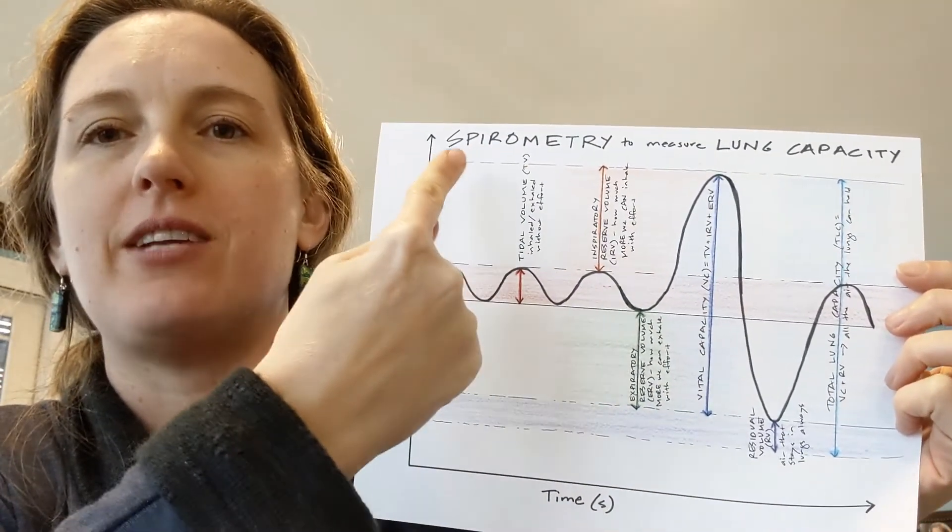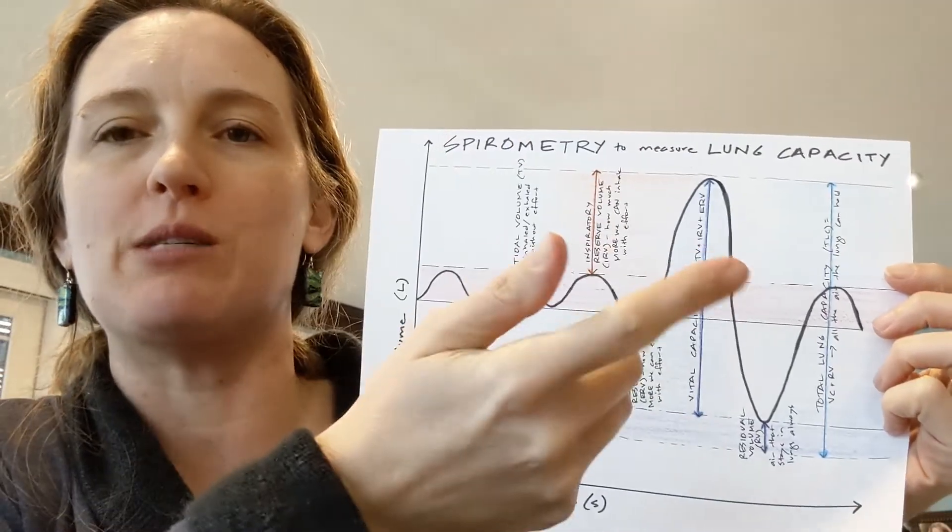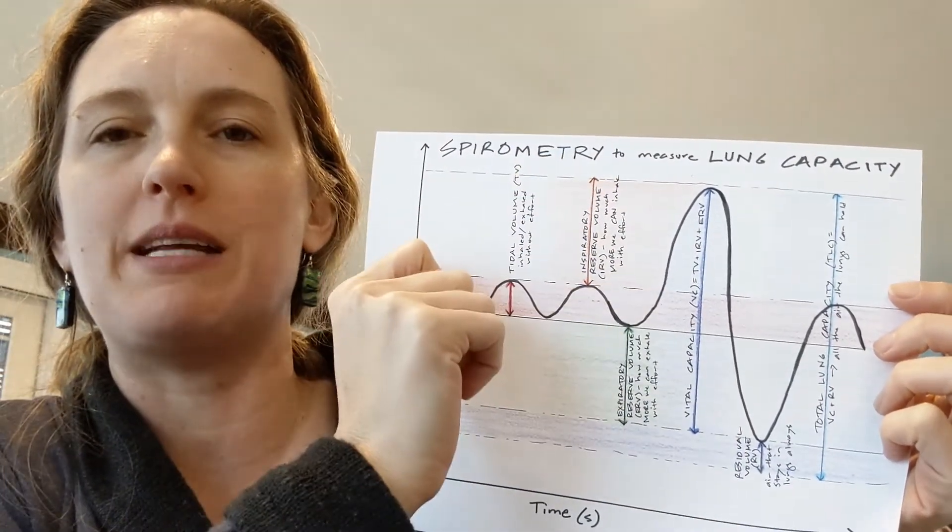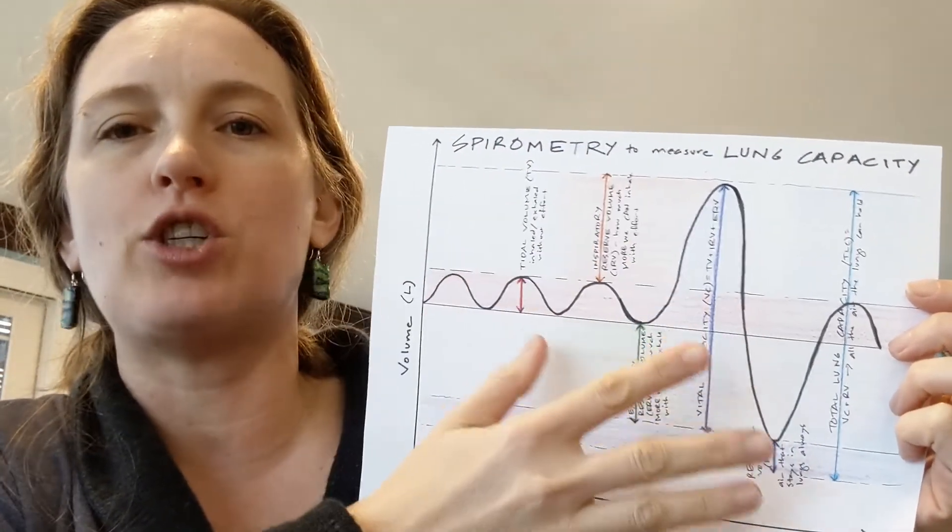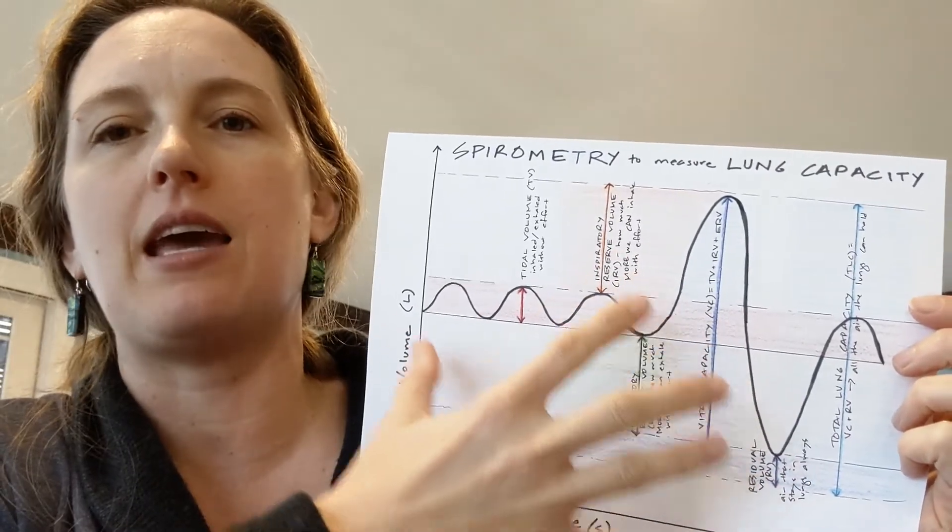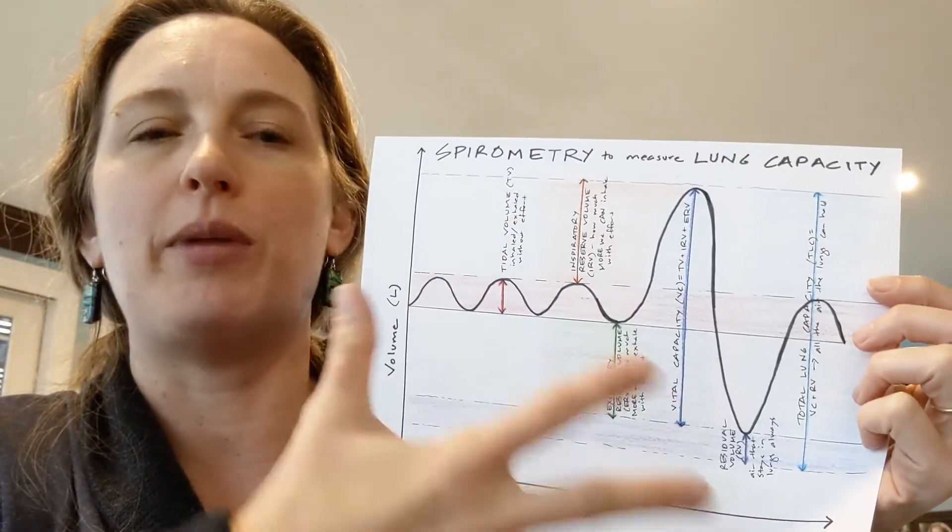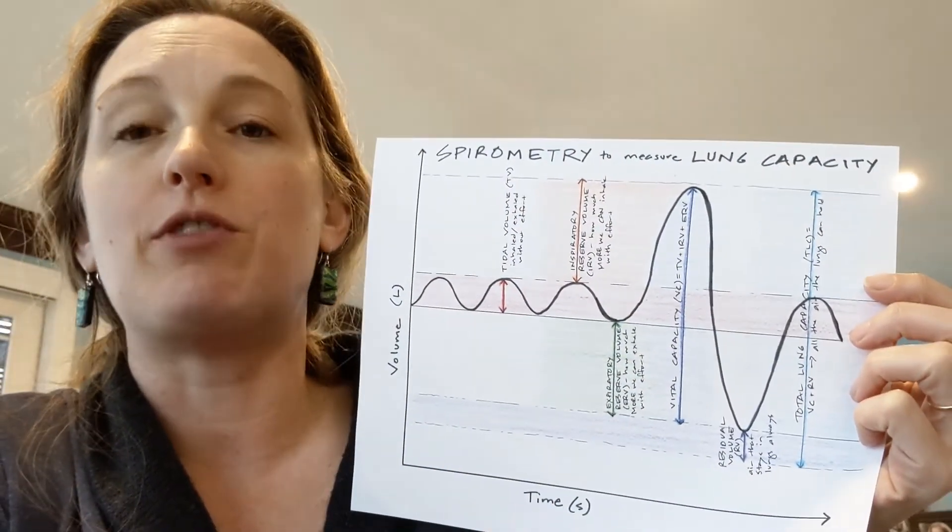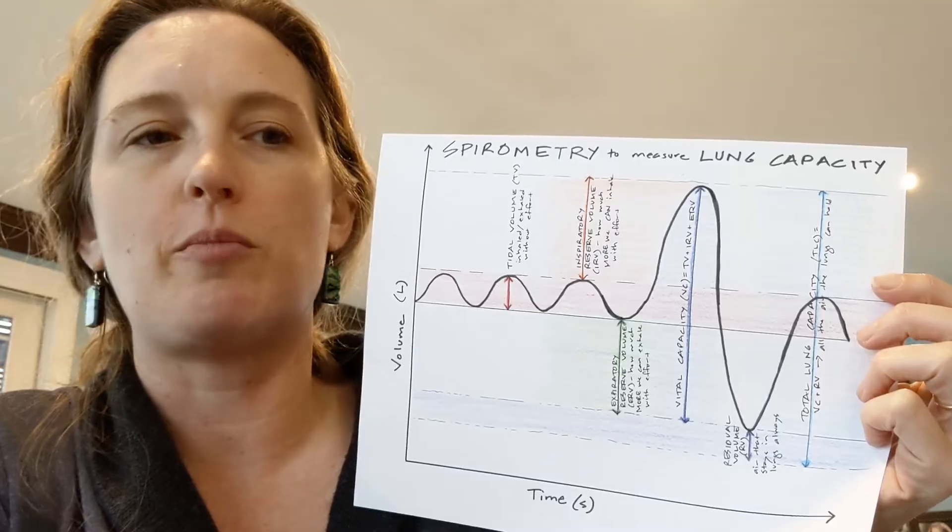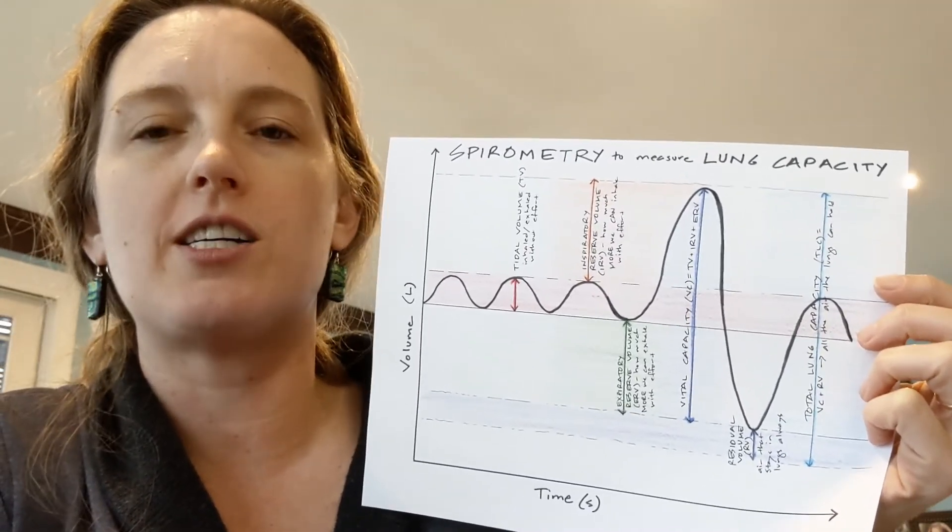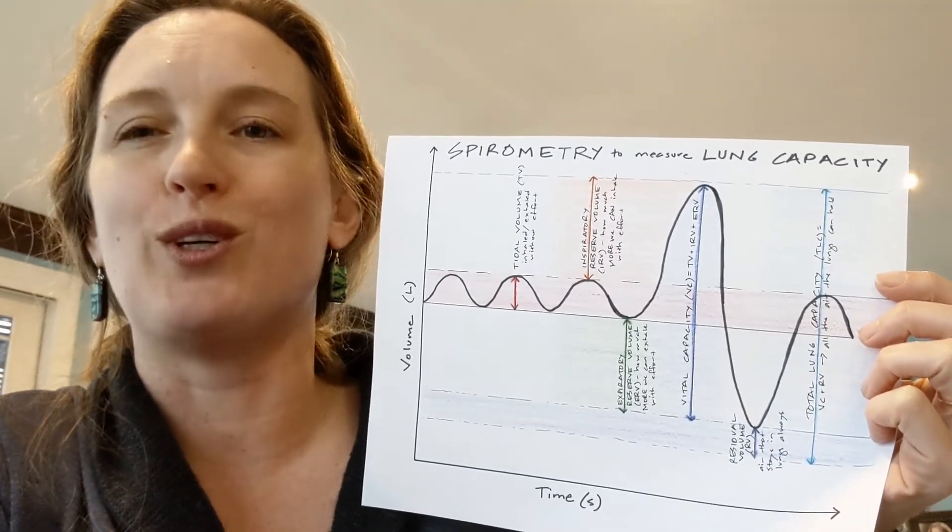So spirometry breaks down into spire, which means breathe, and metri, which means measure. And I'm going to show you through a series of steps how to make and interpret a spirometry graph. In order to do this you're going to need a place to draw your graph, some different colors. I recommend six different colored pencils or markers, and a pen and a ruler also helps out.